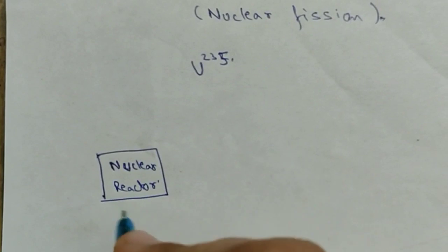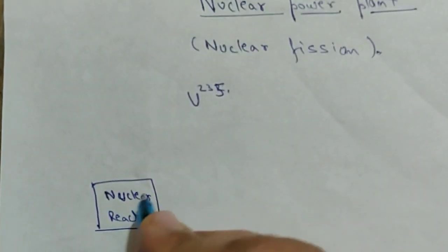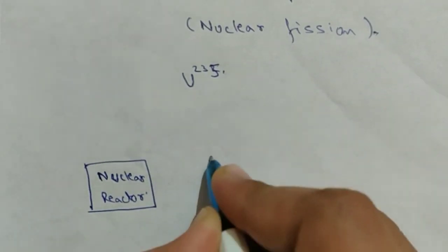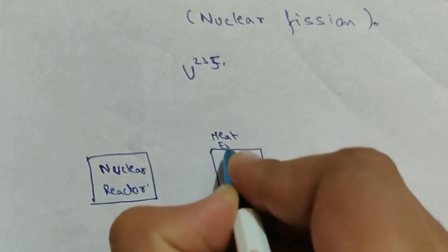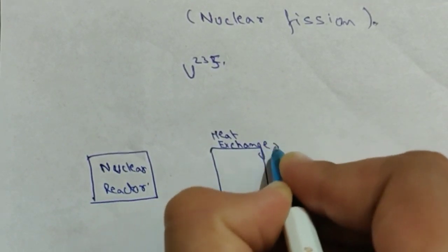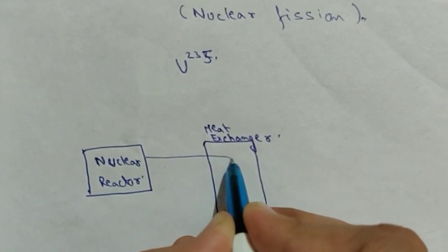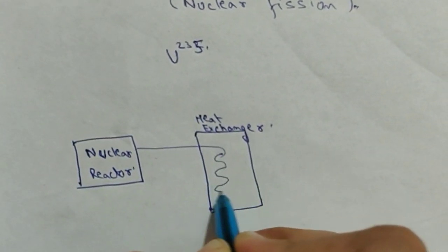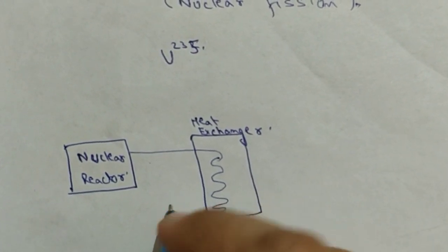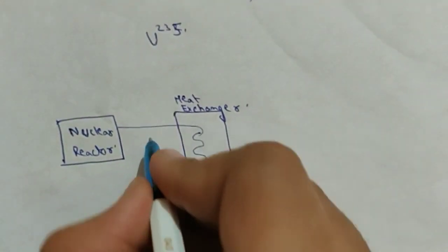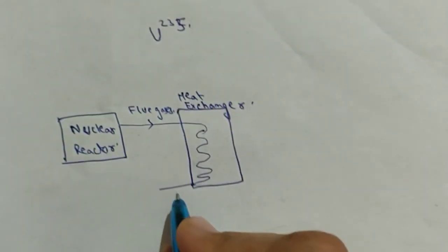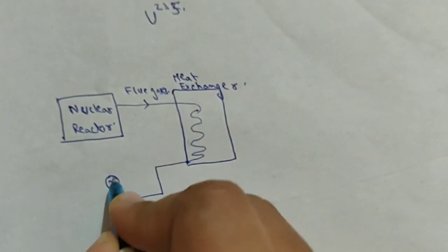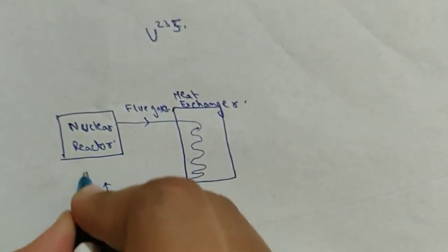So let's suppose this is our nuclear reactor. So this is like a heat exchanger. So the heat from the nuclear reactor is exchanged, and these are flue gases. These flue gases are pumped back to the nuclear reactor through a filter.